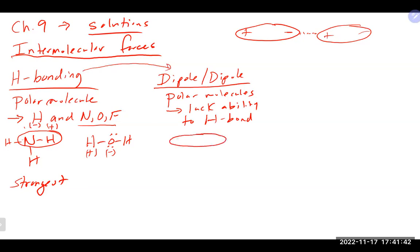Polar molecules can use dipole-dipole interactions because they have a dipole moment, meaning they always have a positive side and a negative side regardless of orientation. When another polar molecule — same or different — comes nearby, you again get that positive-negative attraction, making it a relatively strong intermolecular force.